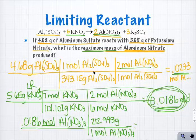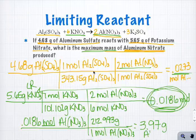And you plug that into your calculator and you get 3.97. And the units on that, of course, are grams of aluminum nitrate. You made it to the finish line.